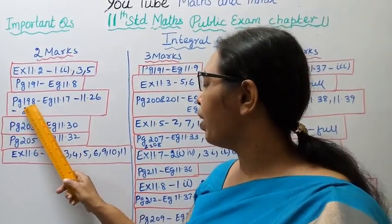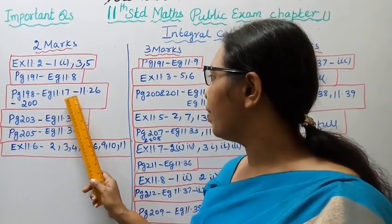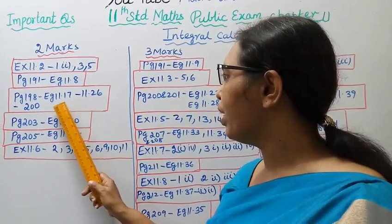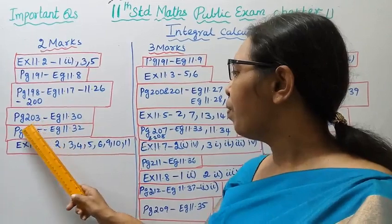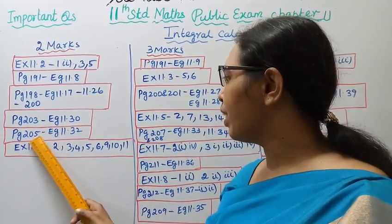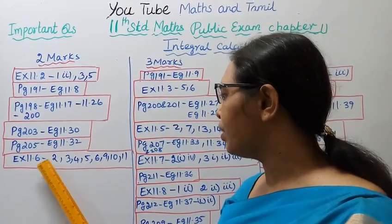Exercise 11.2: first, second subdivision, third sum, fifth sum. Page 191 Example 11.8, Page 198, 200 Example 11.17, 11.26. Page 203 Example 11.30, Page 205 Example 11.32. Exercise 11.6: 2, 3, 4, 5, 6, 9, 10, 11.